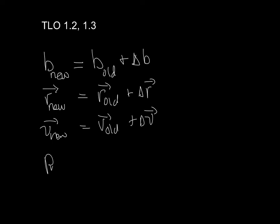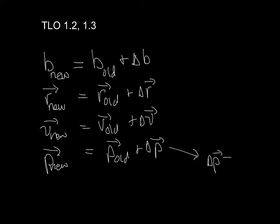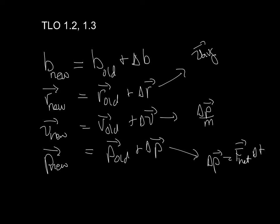The new momentum, if we're doing a physics problem with forces, is the old momentum plus the change in momentum. The change in momentum is given by the momentum principle — it's a vector: the change in momentum equals the net force acting times the change in time. The change in velocity is the change in momentum divided by the mass. And the change in position is simply the average velocity times the change in time.